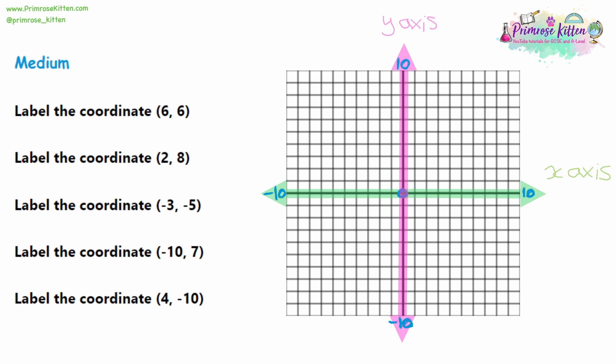When labeling the coordinate (6, 6), it works the same way — first number for the x-axis, second for the y-axis. This time you start right in the very center at (0, 0), go 6 along to the right, then 6 upwards, and draw a dot where that point is. Checking the answer by counting: 1, 2, 3, 4, 5, 6 places to the right, and 1, 2, 3, 4, 5, 6 places upwards. So we've gone 6 right and 6 up — that's our coordinate F.